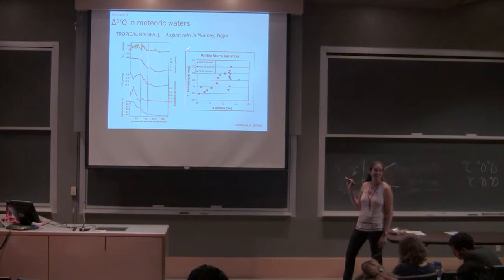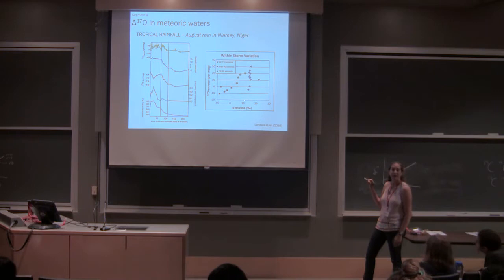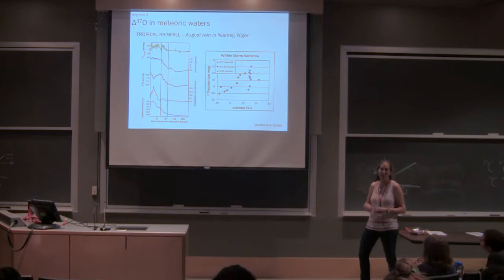So basically we now have more information about this storm than we did with just 18O, 16O, 2H, and 1H, right? Something is driving, maybe evaporation is driving here, but there's something driving a variation in 17Oxs with no variation in DXs. A lot of where we are now is we don't totally understand why, but we see significant relationships and we're starting to unpack them.